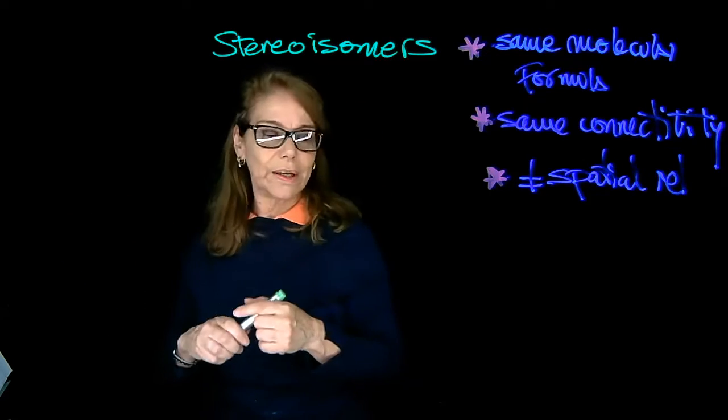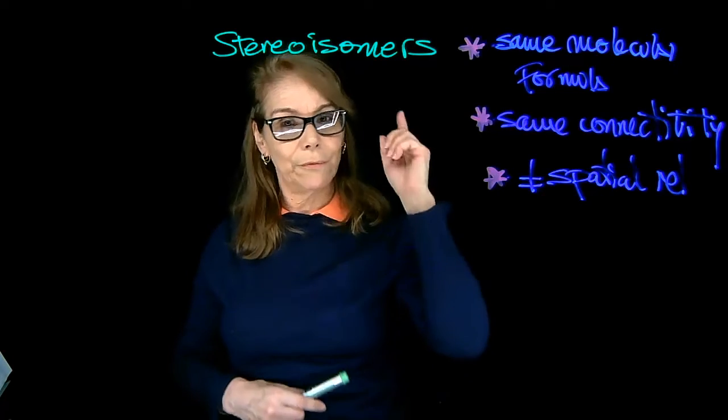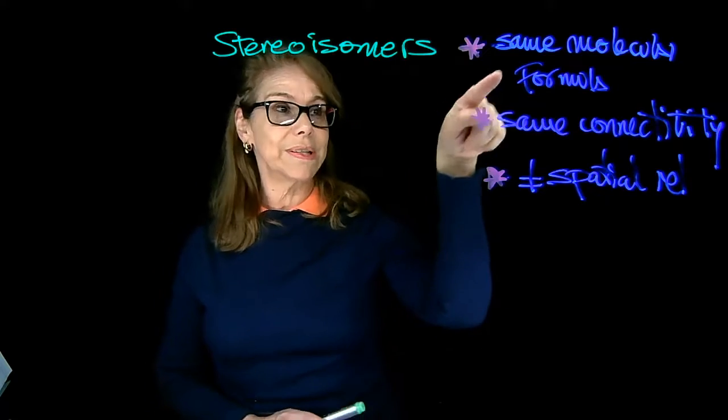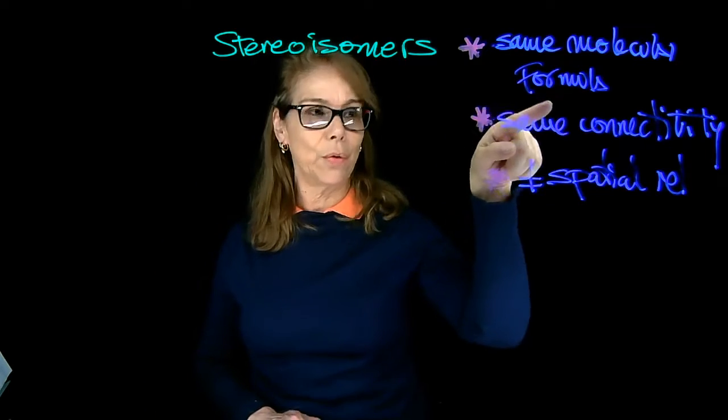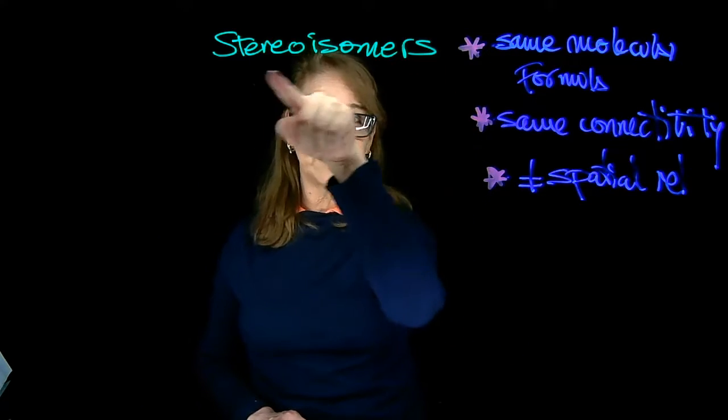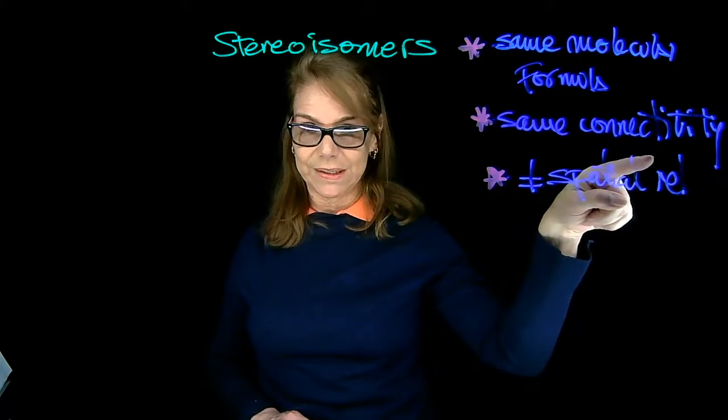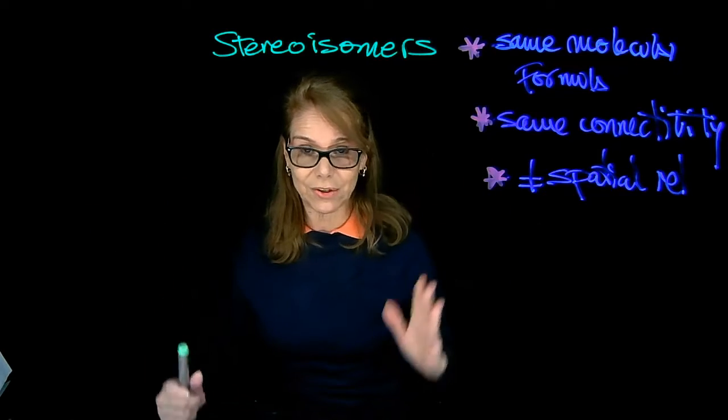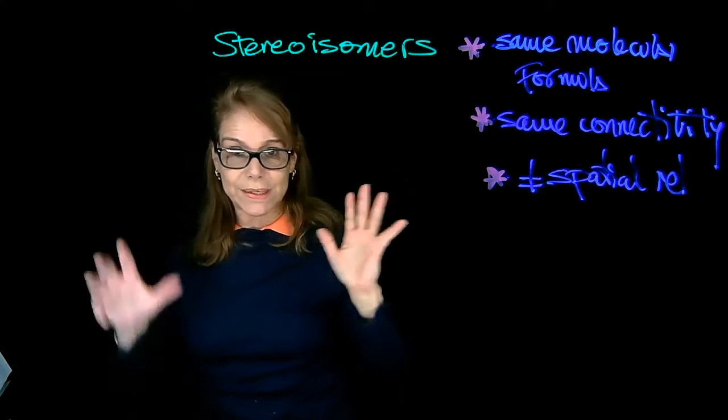So we're going to give you more molecules. And for that, we're always going to do this checklist. To be isomers, they will have to have the same molecular formula. Then stereoisomers also share the same connectivity, but they have different spatial relationship of the groups. Something in the space is different.